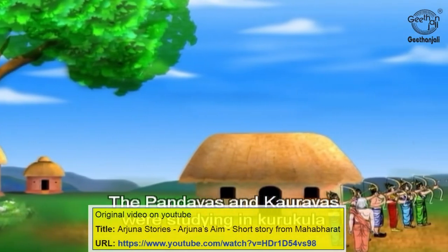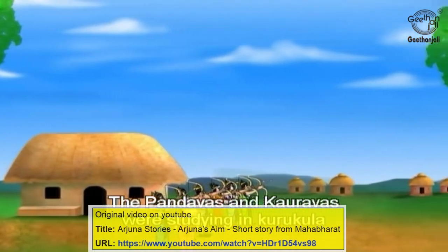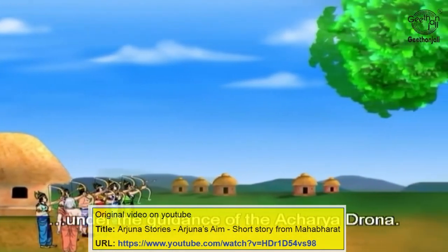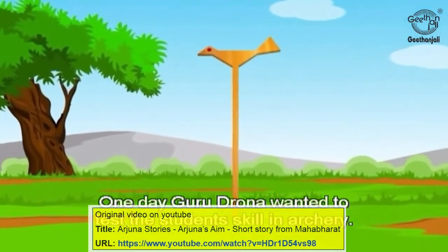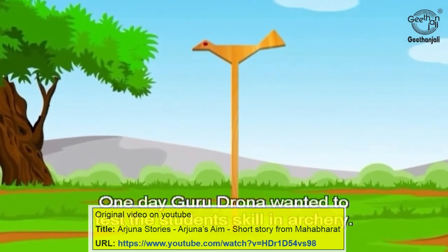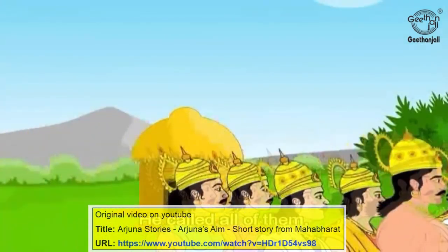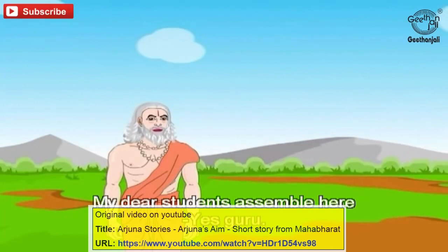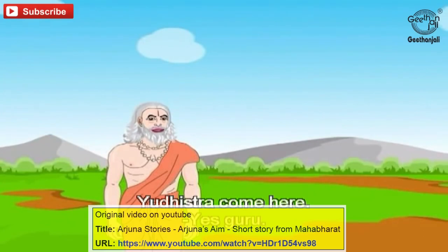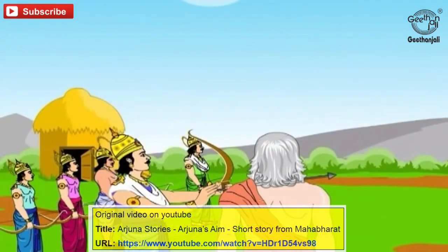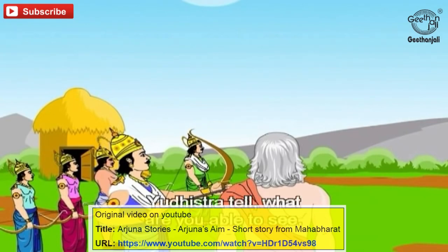The Pandavas and Kauravas were studying in Gurukula under the guidance of Acharya Drona. One day, Guru Drona wanted to test his students' skill in archery. He called all of them and asked them to aim at the bird's eye. He called Yudhishtra first and asked: 'Tell me, what are you able to see?'